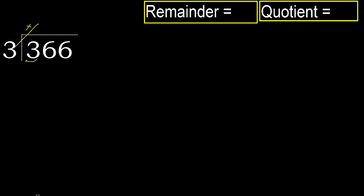3 multiplied by which number is nearest to 3 but not greater? 3 multiplied by 2 is 6 — that is greater. Multiplied by 1 is 3, which is not greater. Subtract: 3 minus 3 equals 0.